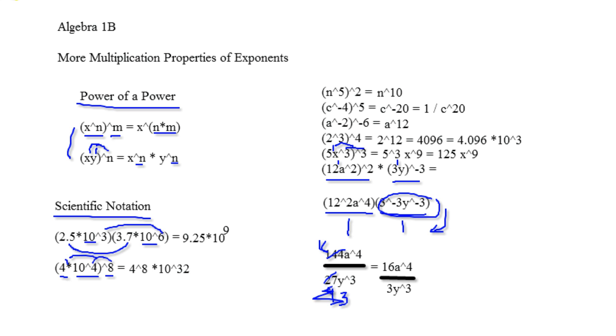Okay. If we do our calculation real fast, 4 to the eighth, this number becomes 65536 times 10 to the 32nd.